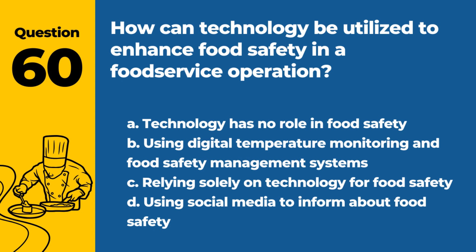Question 60. How can technology be utilized to enhance food safety in a food service operation? A. Technology has no role in food safety. B. Using digital temperature monitoring and food safety management systems. C. Relying solely on technology for food safety. D. Using social media to inform about food safety. Answer: B. Incorporating technology, such as digital monitoring tools and management systems, can greatly enhance food safety practices.